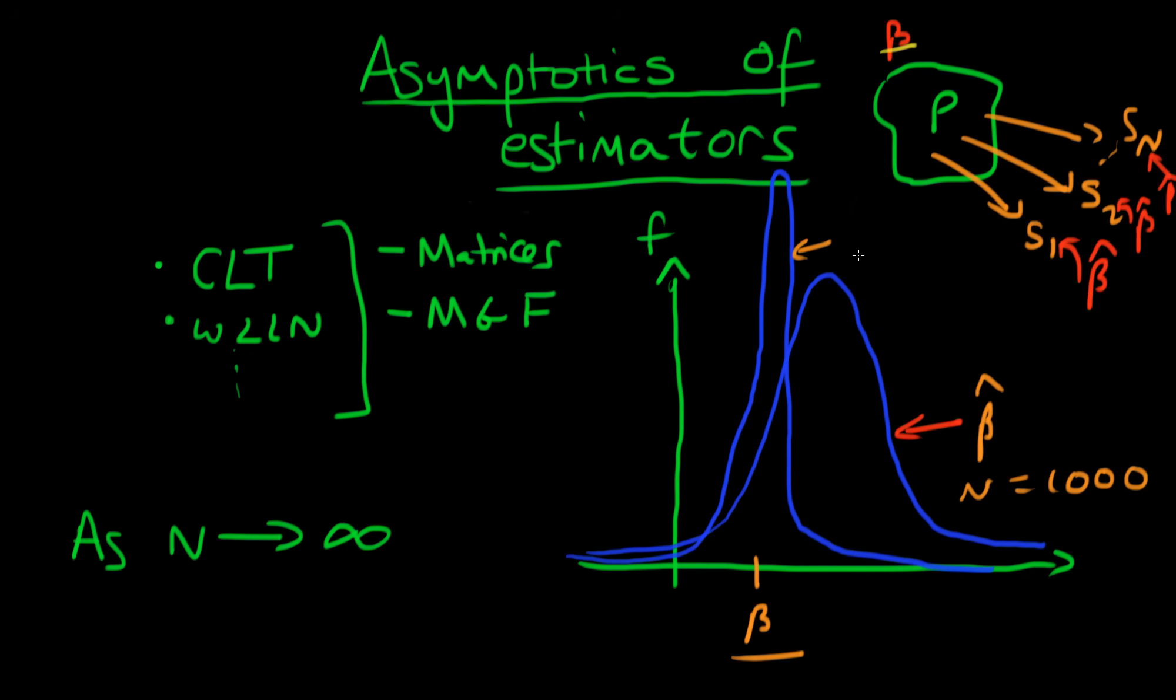As we've increased the sample size, let's say to n equals 10,000, we can see that it's actually become centered over the true population parameter beta. So in this sense, we would say beta hat was a consistent estimator. So that's one property of estimators we're going to study in the asymptotic behavior.